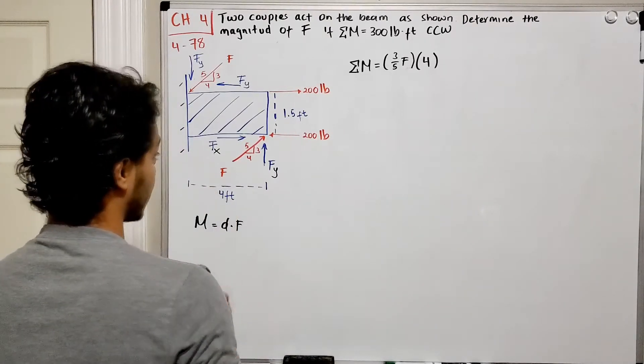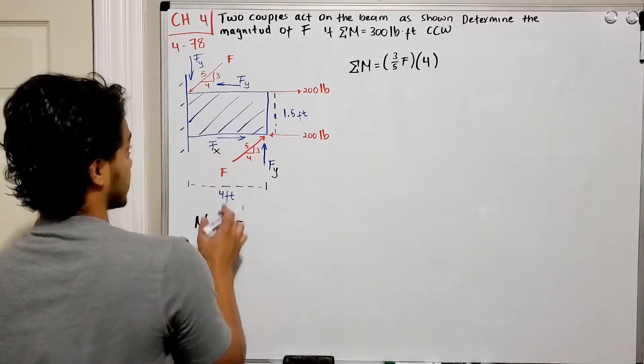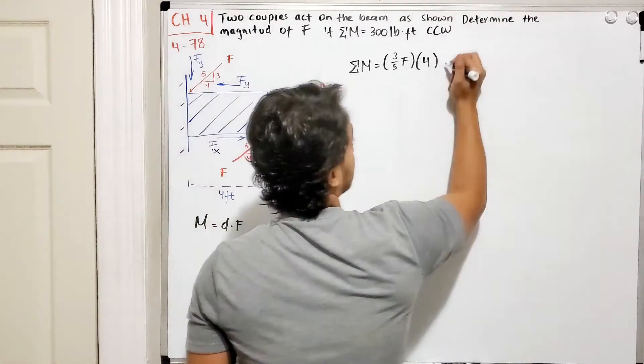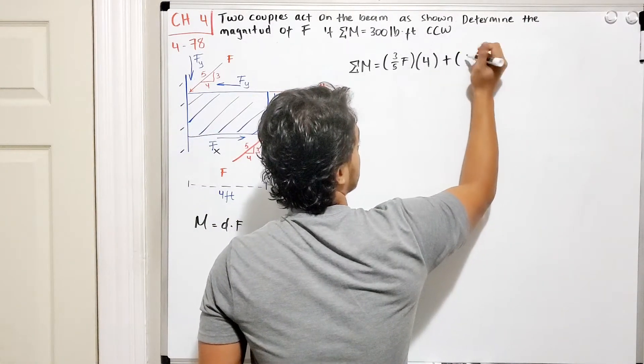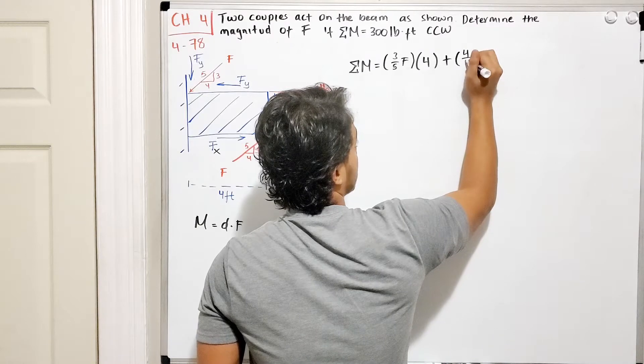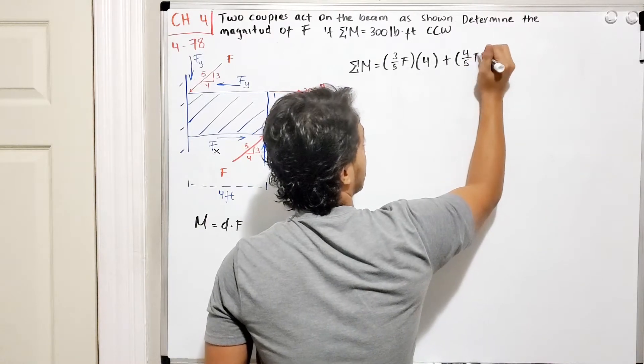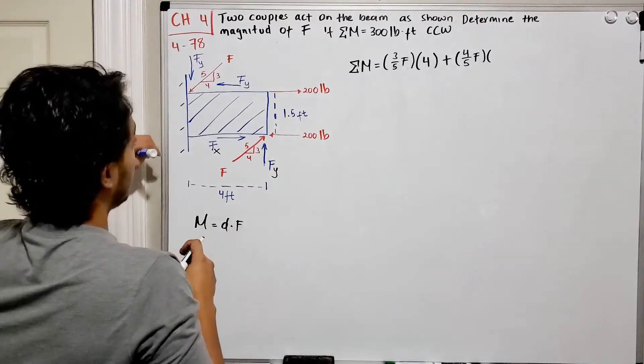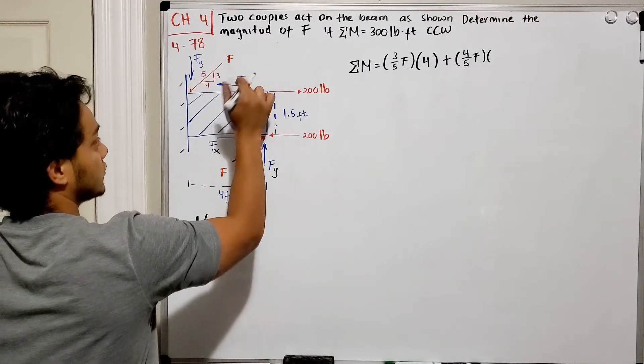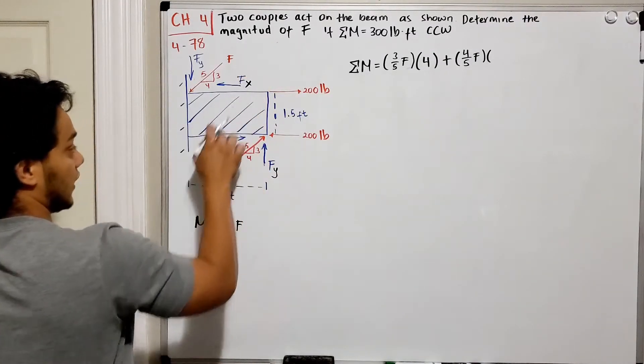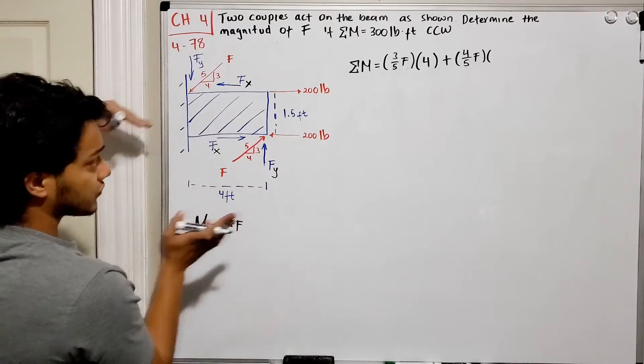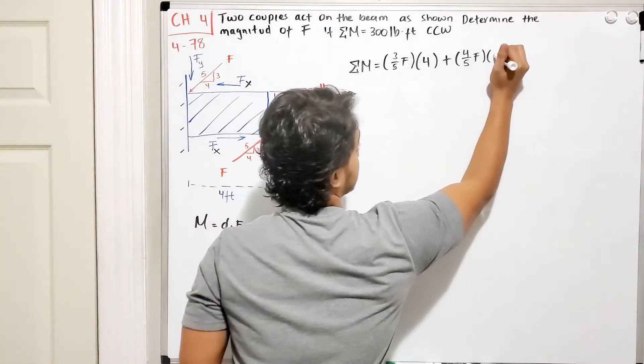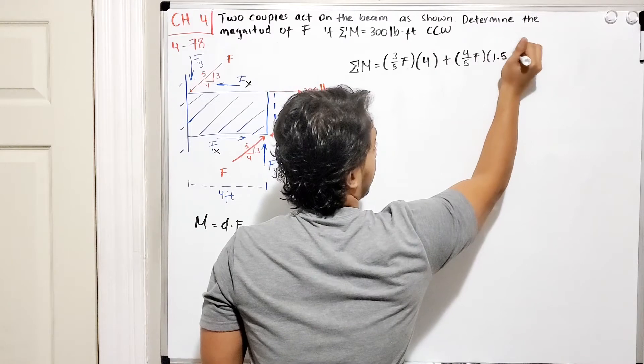Then let's do F_x. So F_x, which is plus because it's also going counterclockwise, is four out of five of my force F multiplied by the distance between the two F_x, which is 1.5 feet distance.